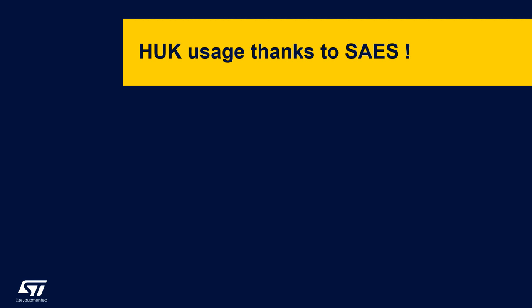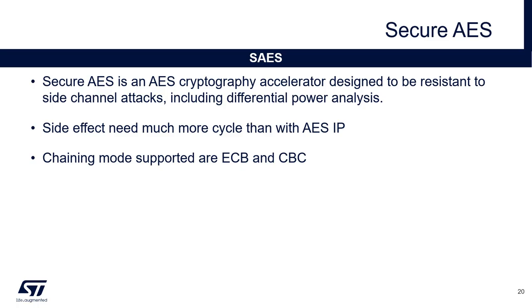I would like to give you details about the Secure IOS and how it could be configured. The STM32 product already includes an IOS crypto accelerator, and the STM32U585 includes this classical IOS. But in addition to that, it also includes a new IP: the Secure IOS. The Secure IOS has been designed to be resistant to side channel attacks, and I will detail those attacks in the next slide. The main side effect of this resistance is a performance decrease compared to the classical IOS accelerator.